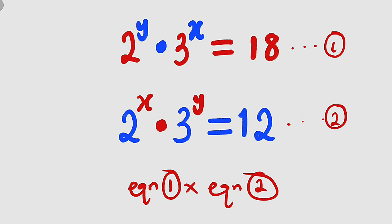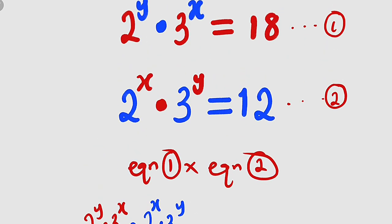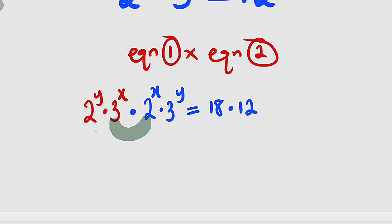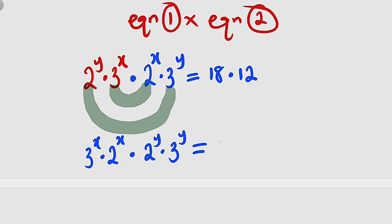Equation 1 is 2 to the power of y multiplied by 3 to the power of x. We multiply this by the second equation, which is 2 to the power of x multiplied by 3 to the power of y. We have multiplied their left-hand sides, so we equally multiply their right-hand sides. Combining like-base terms: 3 to the power of x multiplied by 2 to the power of x, and 2 to the power of y multiplied by 3 to the power of y. This equals 18 times 12, which is 216.